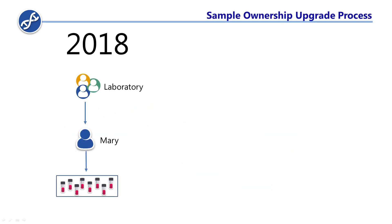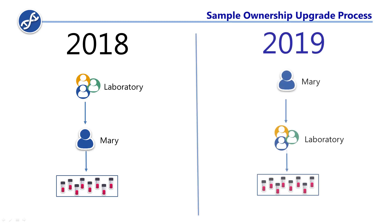Let's imagine a group named Laboratory that user Mary is a part of. Mary owns samples in 2018. In 2019, the ownership will simply switch to Laboratory.